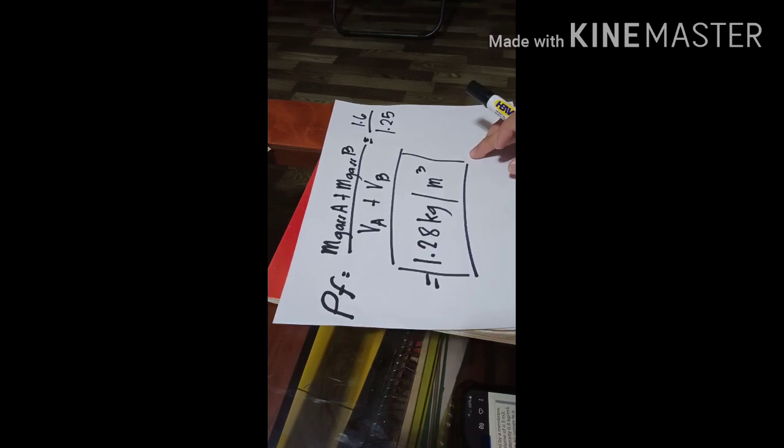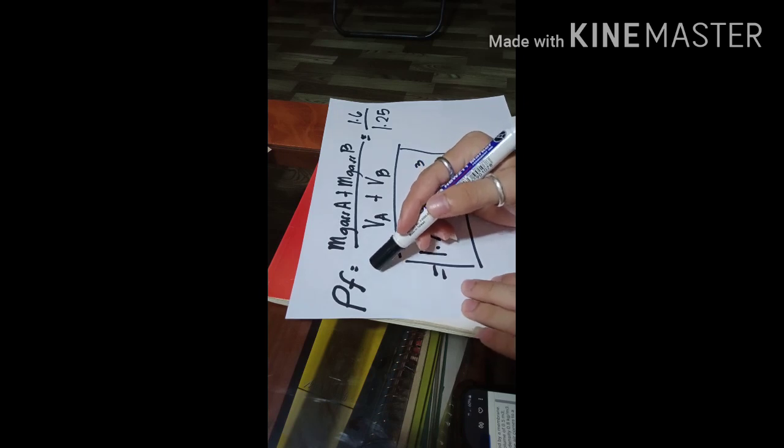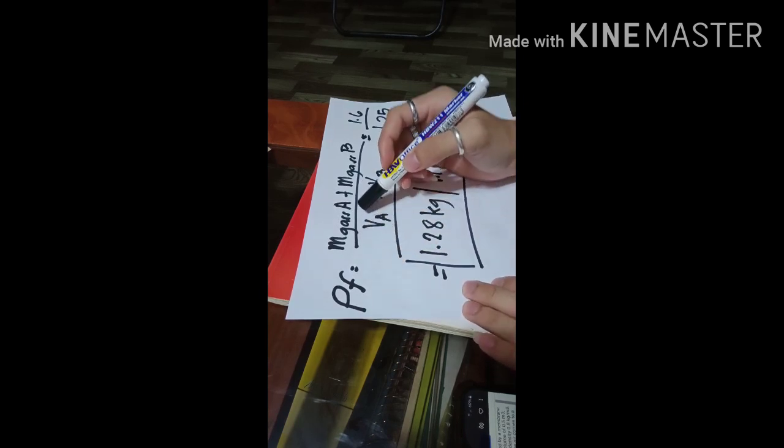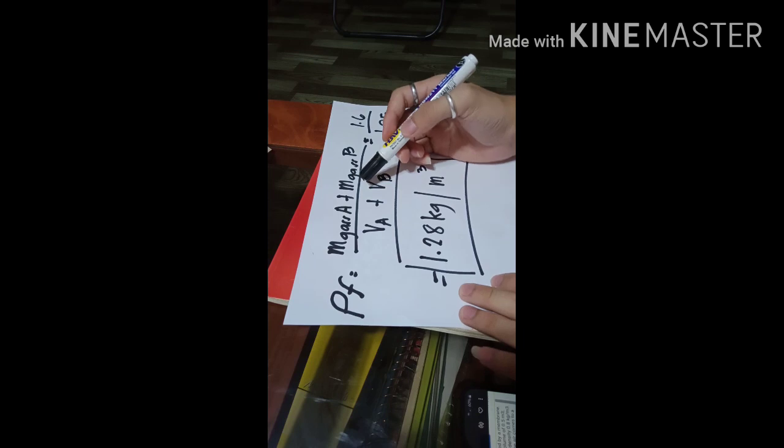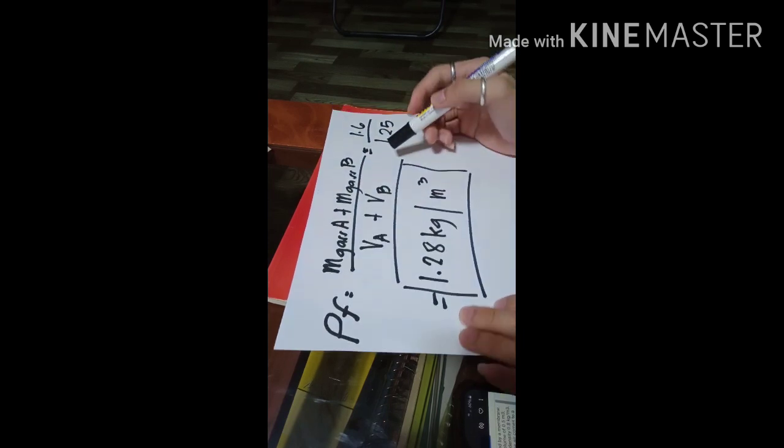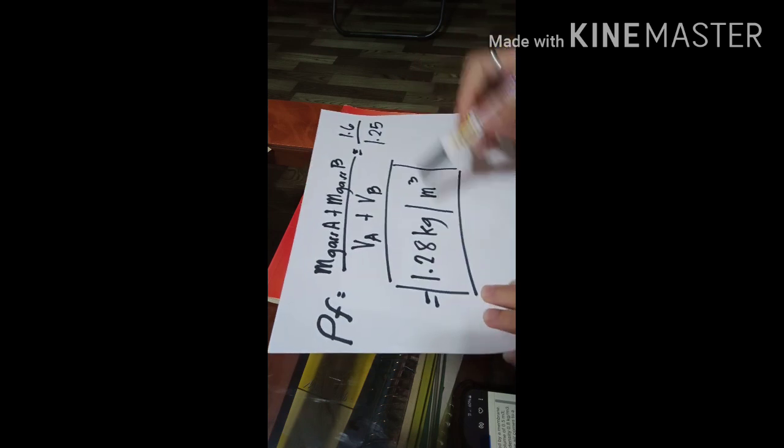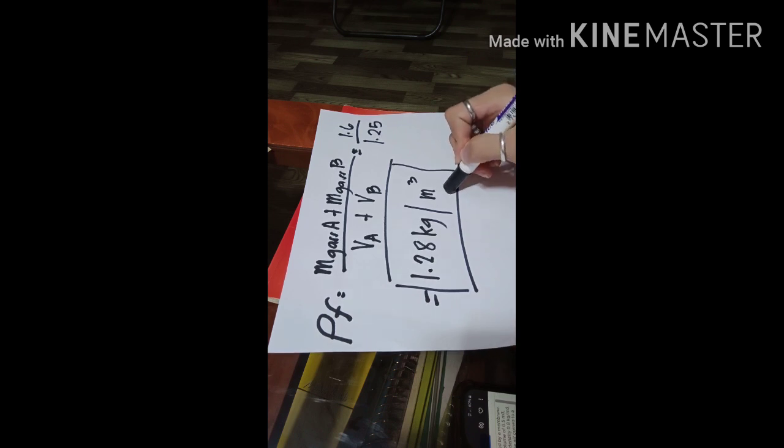And here's the calculation. Density F equals M sub gas A plus M sub gas B over V sub A plus V sub B equals 1.6 over 1.25. The answer is 1.28 kilograms per cubic meter. And that's the final answer.